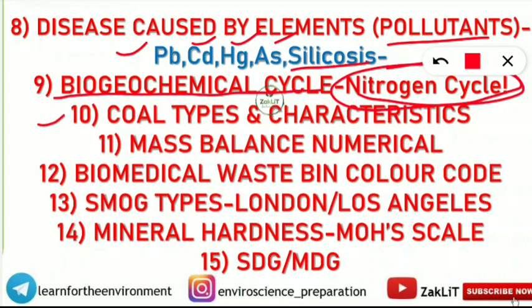The tenth topic is coal types and their characteristics. Coal types include anthracite, lignite, and peat. You should know their characteristics — which has the highest moisture content, which is the best quality coal, and which has the highest sulfur content. These things are very frequently asked.